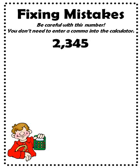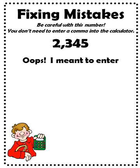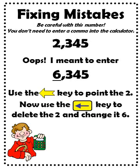On this slide, we will learn another way to fix mistakes. First, enter the number 2,345 into your calculator. I always tell the students to be careful — you don't need to enter the commas in the number. Oops, but I meant to tell you to enter the number 6,345. To fix this mistake, use the left arrow key to point to the digit that you want to change, in this case the 2. Now delete the 2 for 2,000 by pressing the delete key, and change the 2 to a 6 for 6,000. To see what this looks like on your calculator, continue to the next slide.